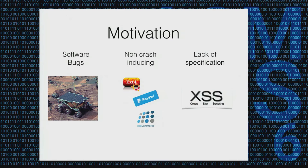Another problem is that sometimes even the vulnerability specification itself is very vague. An example is cross-site scripting, which is a very common web application vulnerability. We believe this is a vulnerability for which an actual specification does not exist, and I will explain why right away.